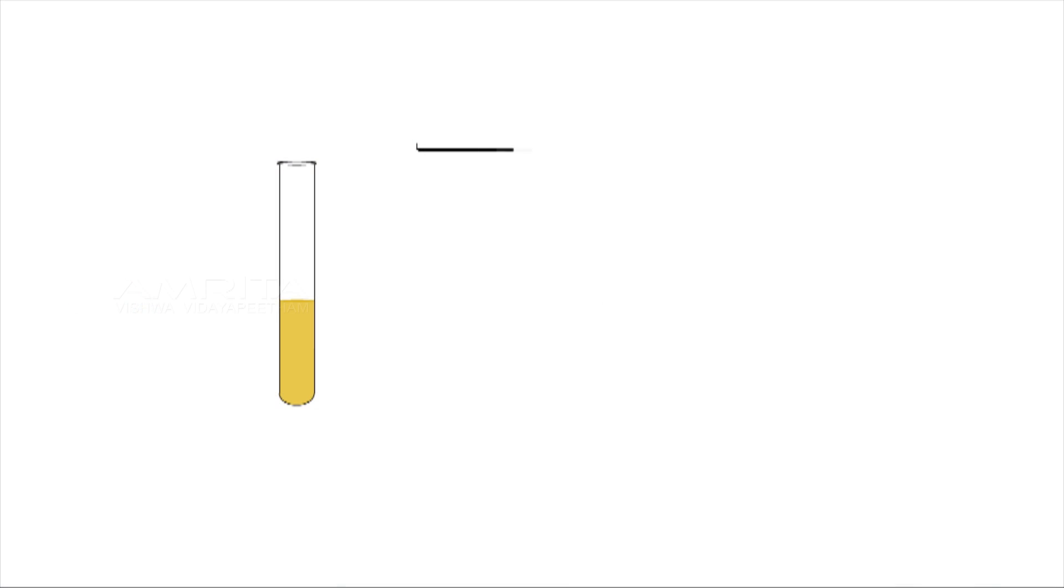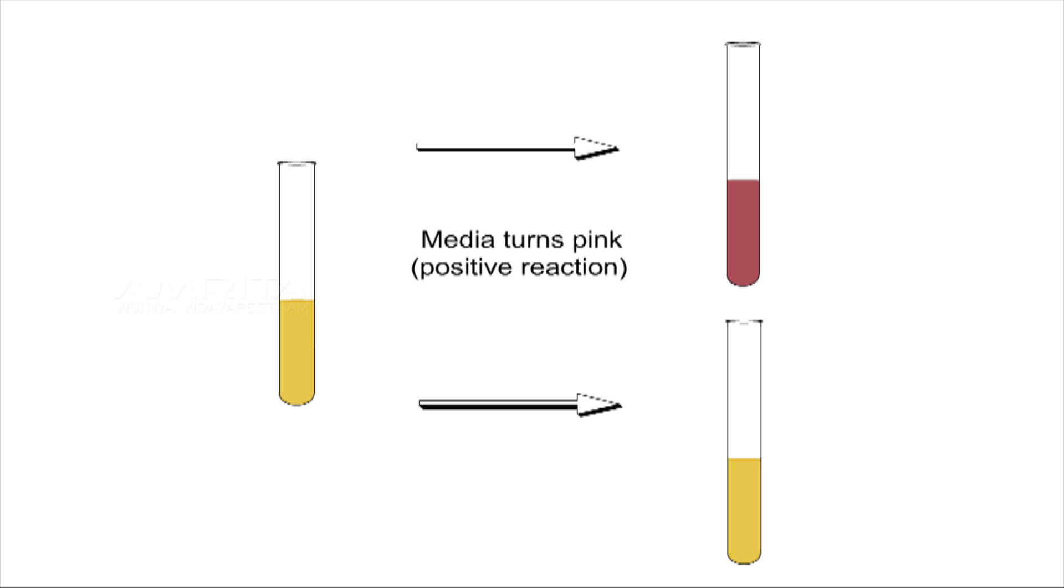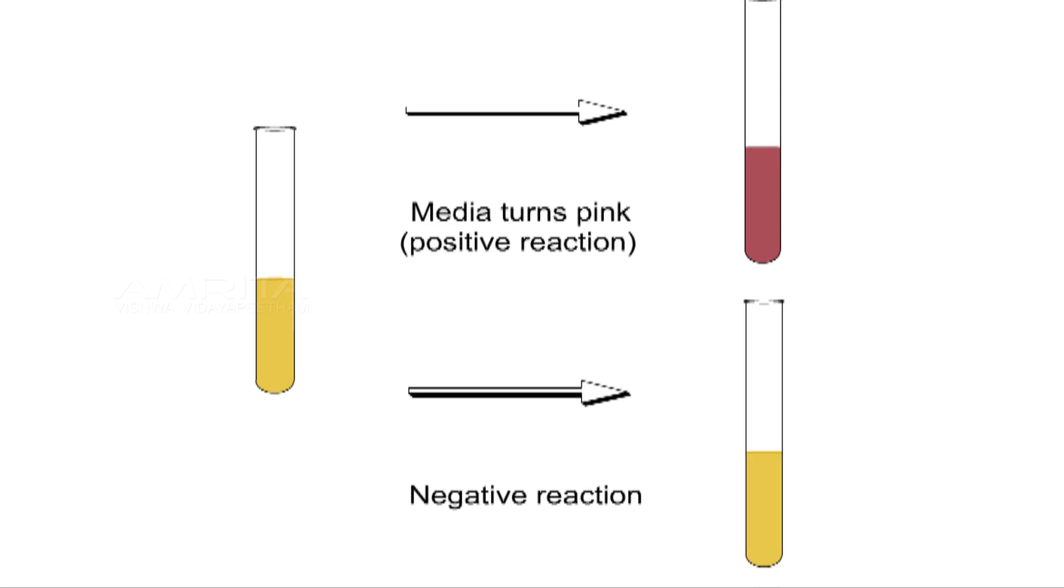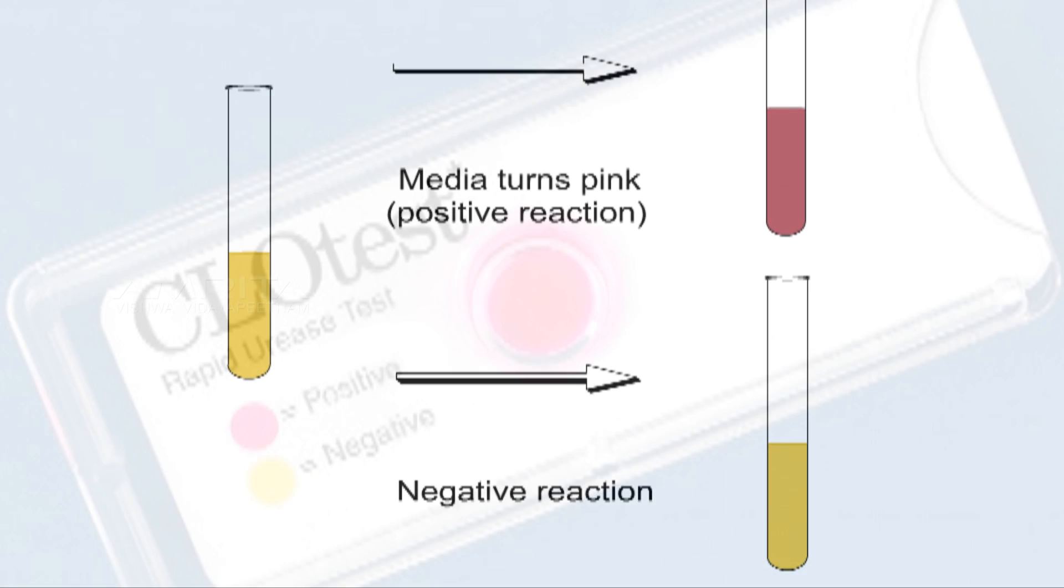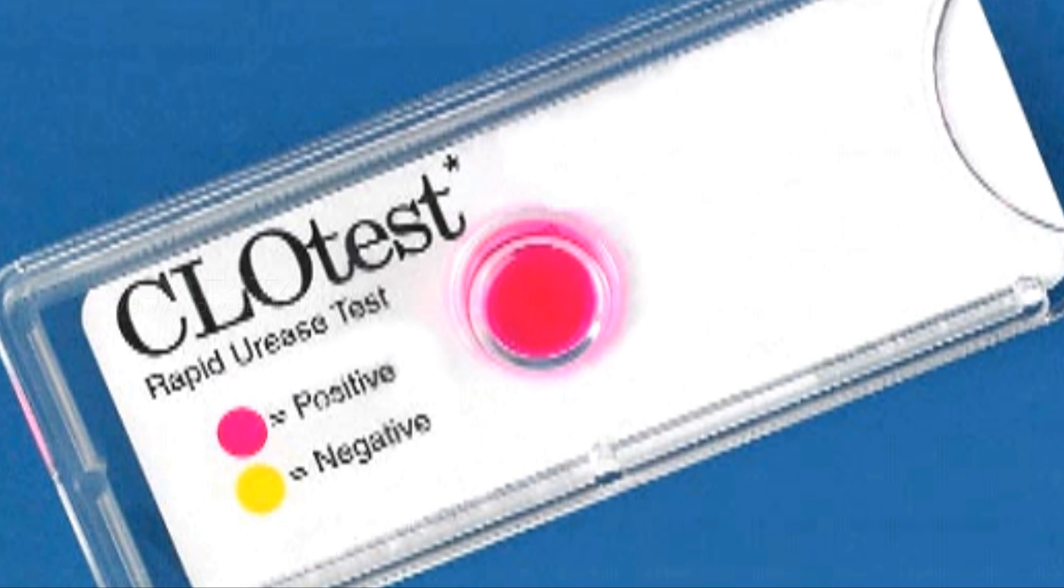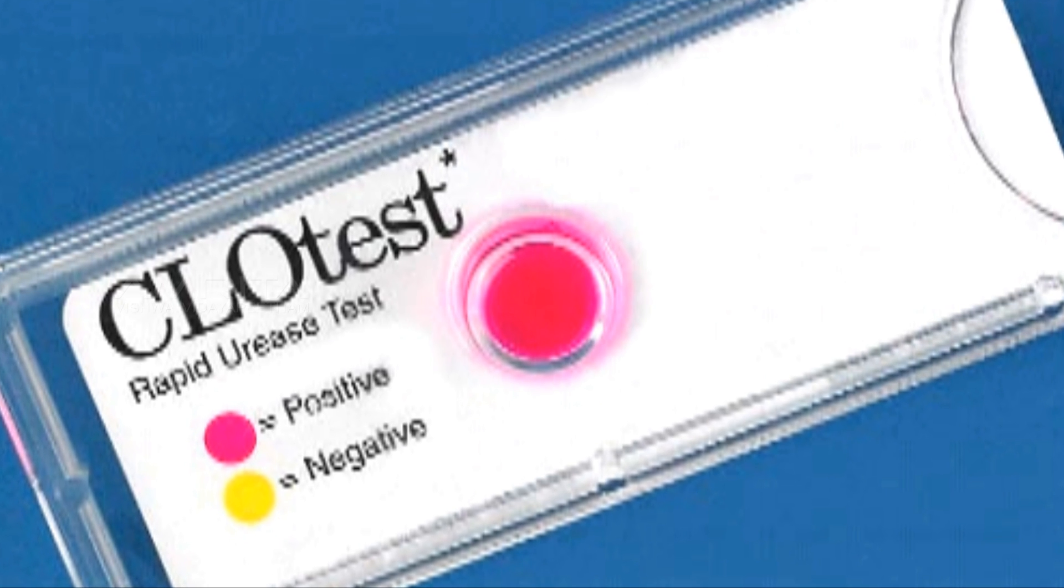If the urea in the medium is degraded and ammonia is produced, an alkaline environment is created and the media turns pink. This is a positive reaction for the presence of urease. Failure of deep pink color to develop is evidence of a negative reaction.